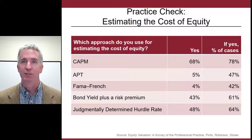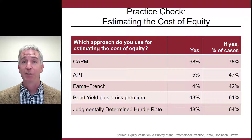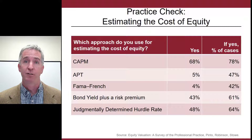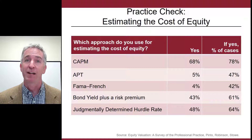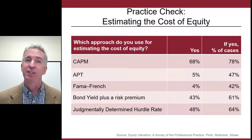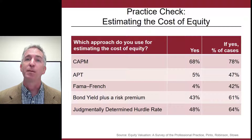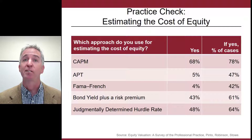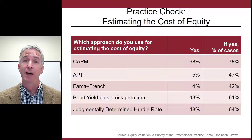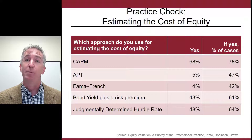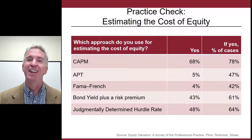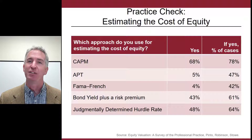Another 48 percent said they're doing a judgmentally determined hurdle rate for the cost of equity — a pretty vague answer. Academics have come up with sophisticated approaches like APT, but only five percent of practicing equity analysts indicate they're using that, and only four percent are using the Fama and French method. However, 68 percent of them are using the Capital Asset Pricing Model, known as CAPM.